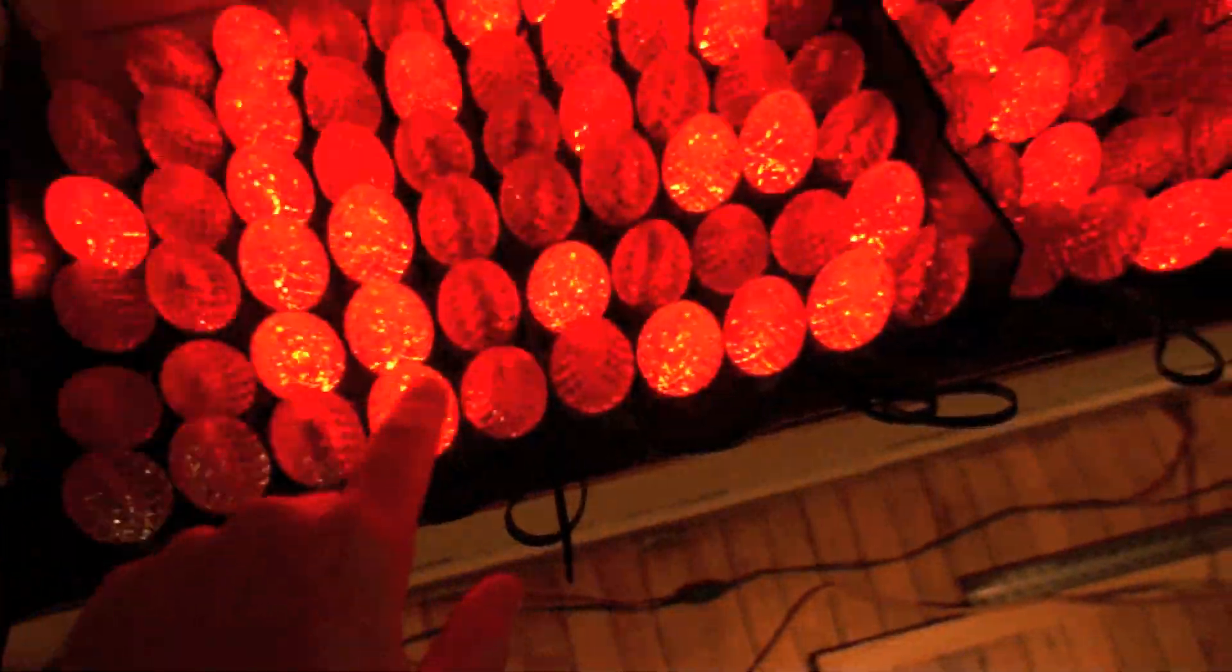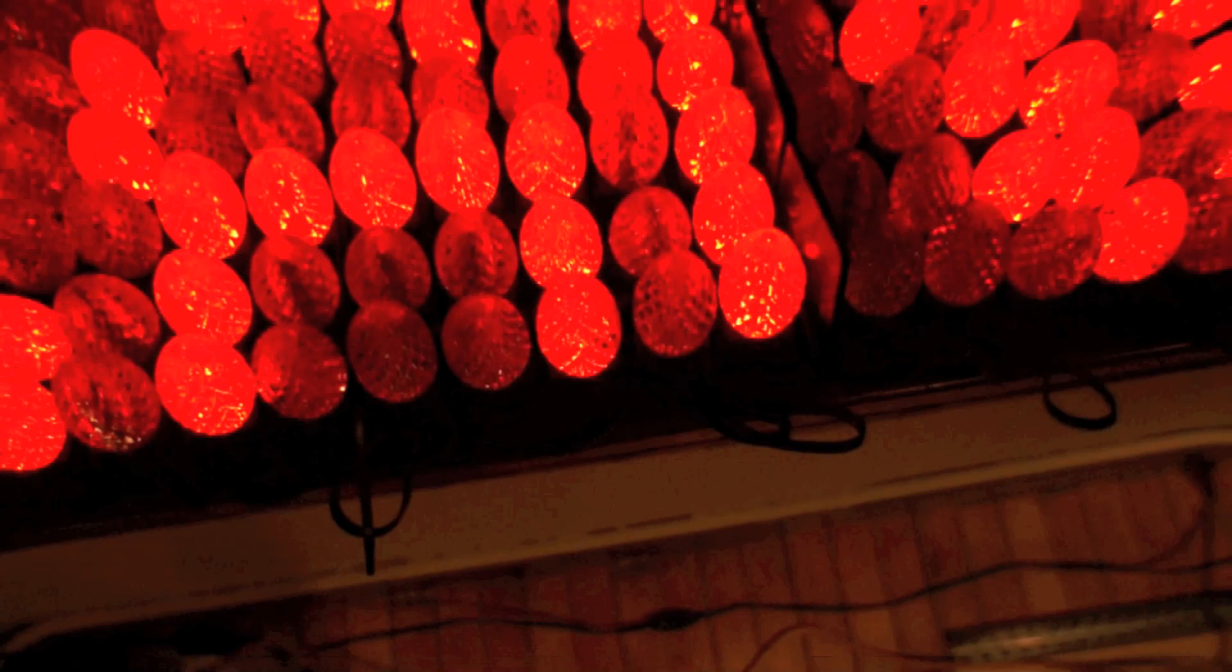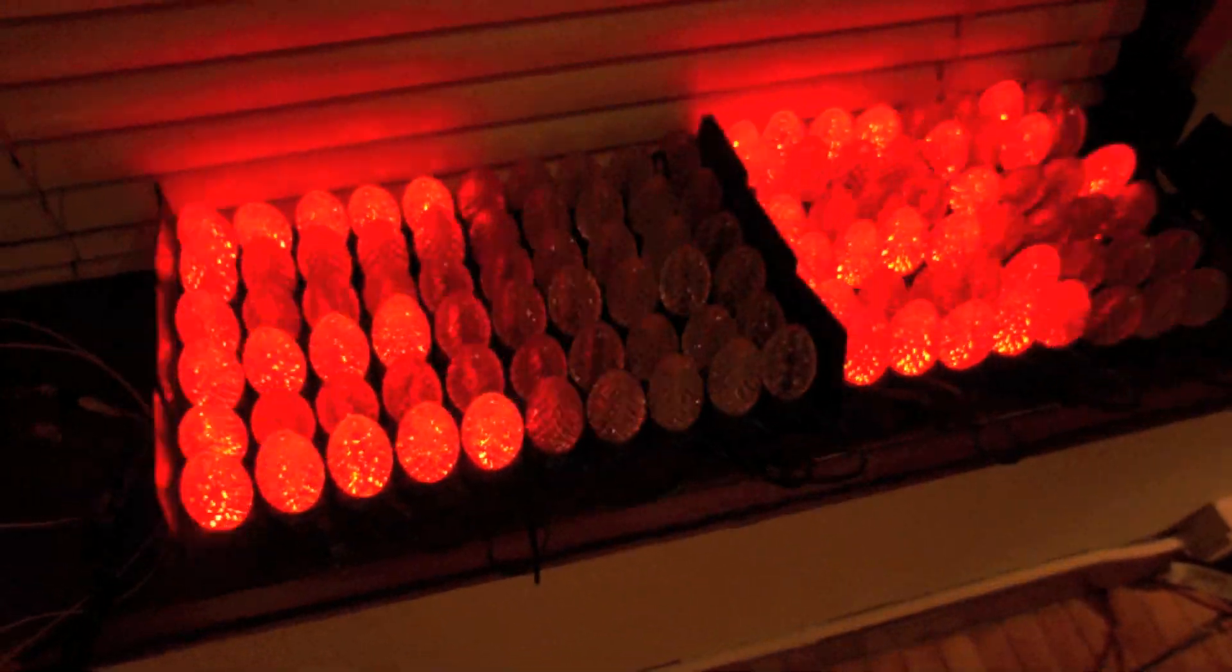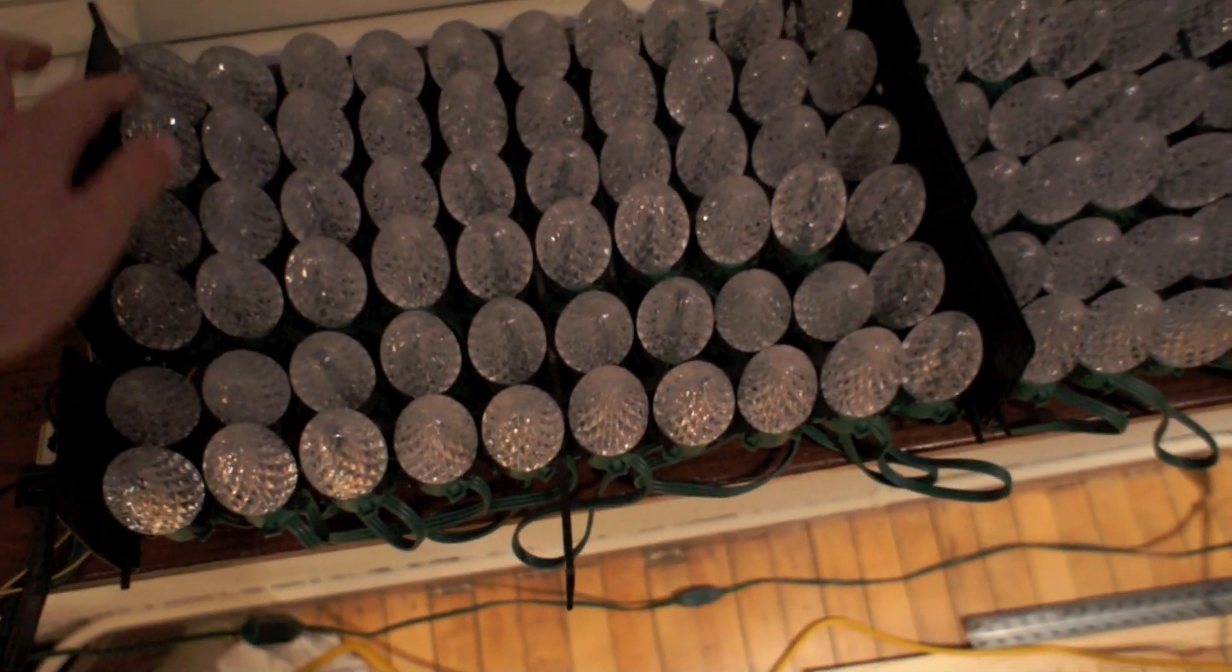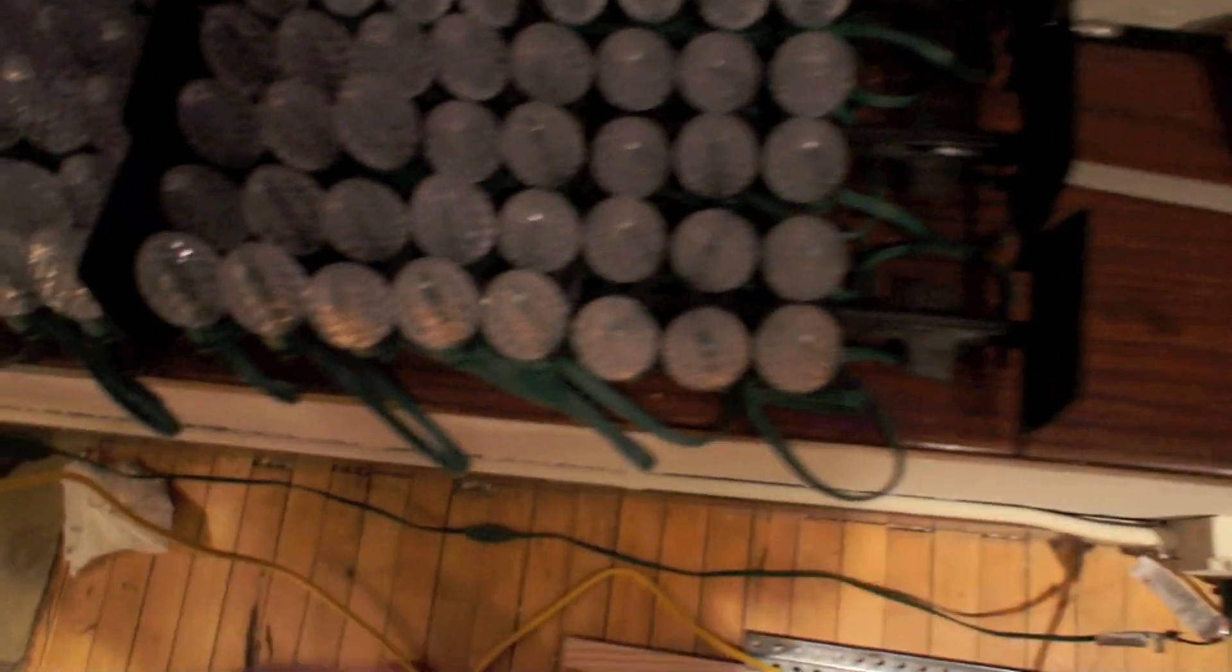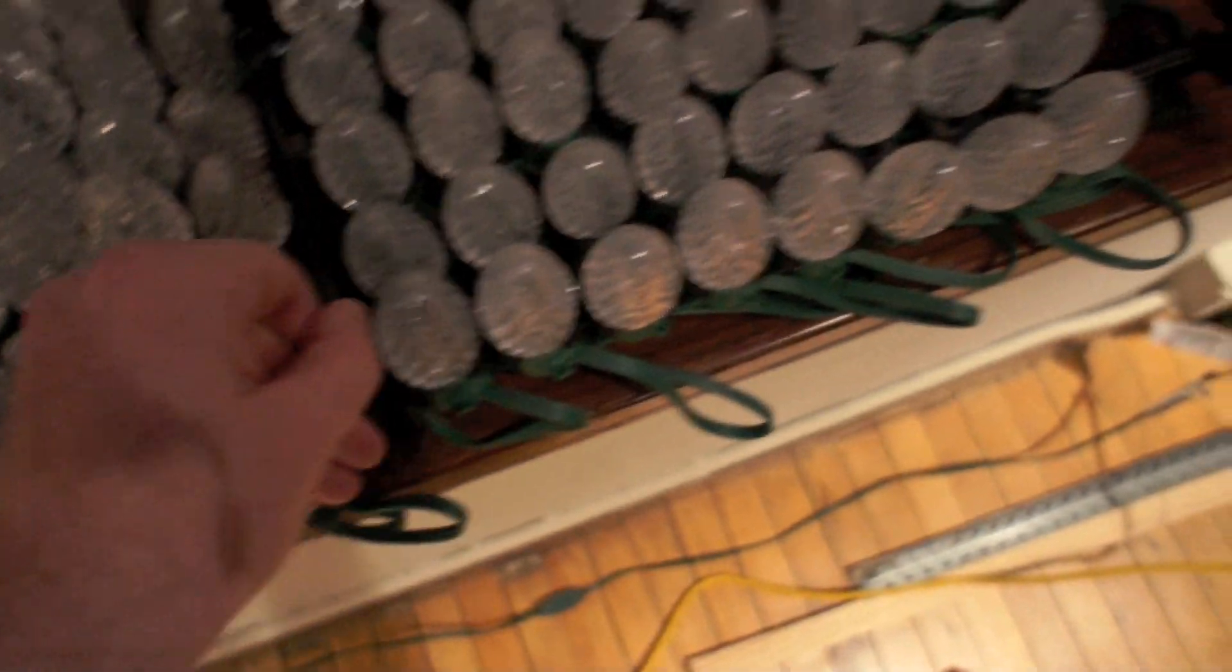This one's built out of three strands of GE color effects LED Christmas lights, which are basically the coolest Christmas lights ever built. The three strands of lights are arranged together in a 6 by 18 pixel grid by repurposing the packaging material they came in.